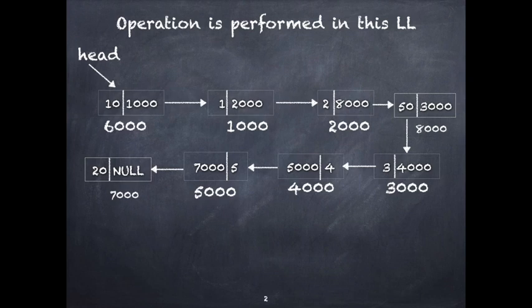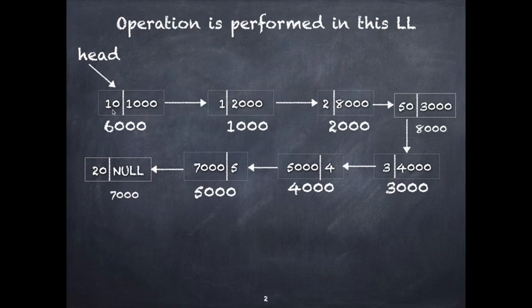This is the linked list on which we are going to work. Here you have a head pointer — no tail pointer — only the head pointer pointing to the first node. The first node address is 6000, the data part contains value 10, and the next pointer points to a node stored at location 1000.